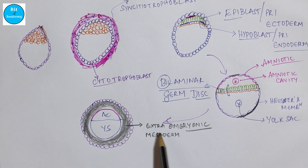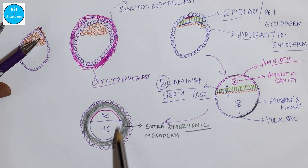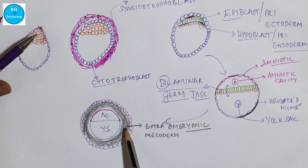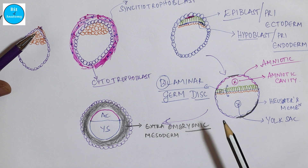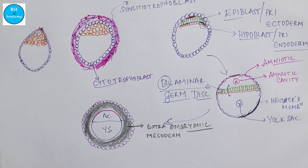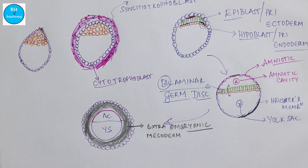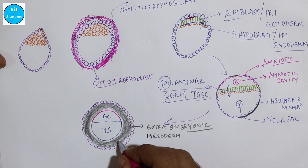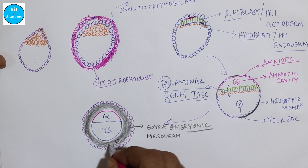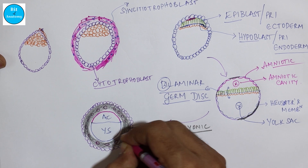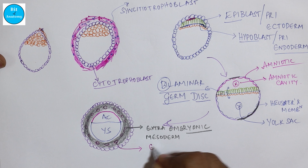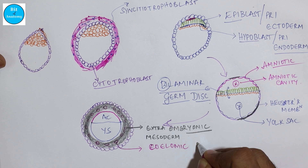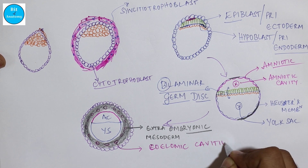Remember, this extra-embryonic mesoderm will not contribute to any part of our body. It will contribute to the development of the umbilical cord and also the development of the placenta. Within this extra-embryonic mesoderm, gradually small cavities will appear — these small cavities that appear within the extra-embryonic mesoderm are nothing but the coelomic cavities, or the extra-embryonic coelomic cavities.